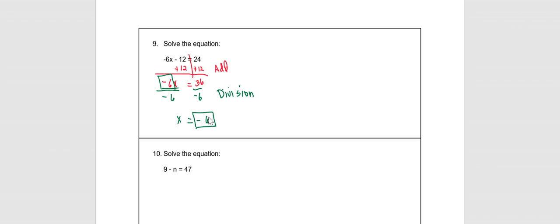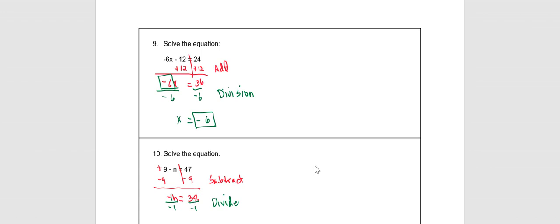In number 9, we eliminate 9 by subtraction. This is understood to be addition, and the inverse is minus 9. So we have negative n equals 47 minus 9, which is 38. A negative in front of your n means negative 1 times n, so we eliminate negative 1 by division, giving us n equals negative 38, because 38 divided by negative 1 is negative 38.